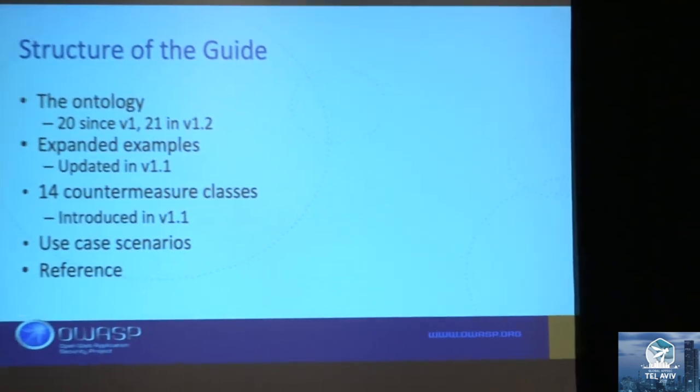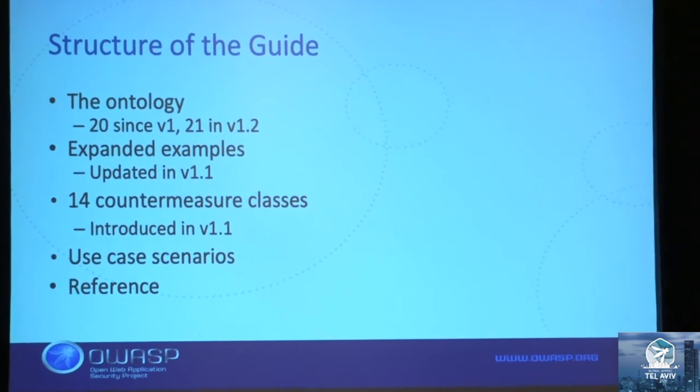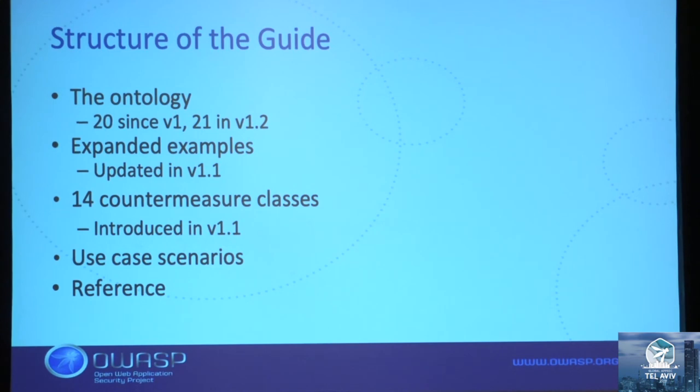These are the diagrams we use to describe this problem — yellow ones are assets we're trying to protect and the types of interactions. This is basically a preview of the book and how it's structured. We describe the ontology — 21 now — and added more industry examples when I started collaborating with Colin. We also added countermeasure classes and use case scenarios.